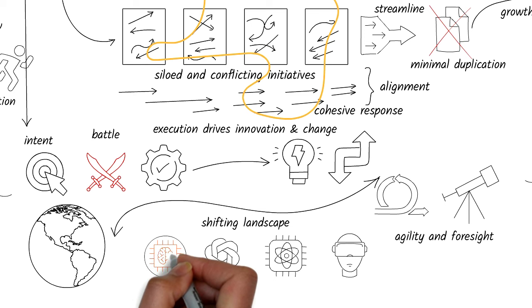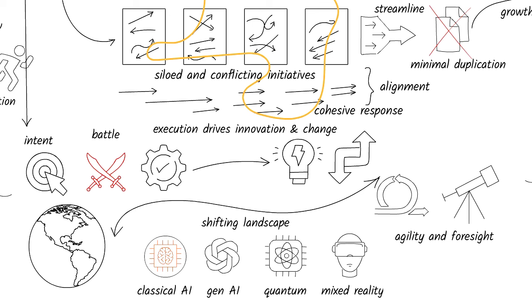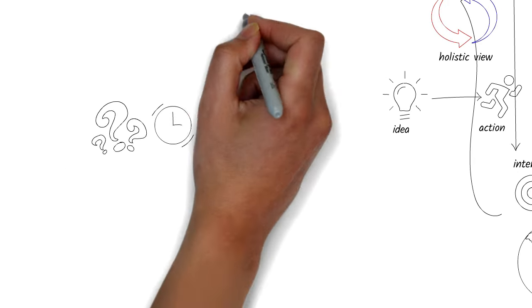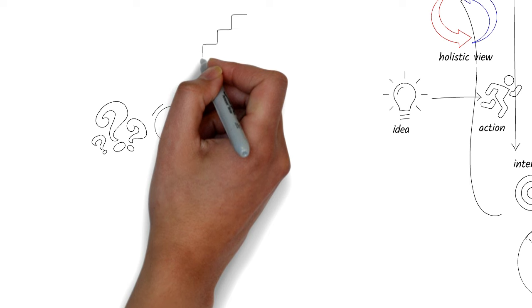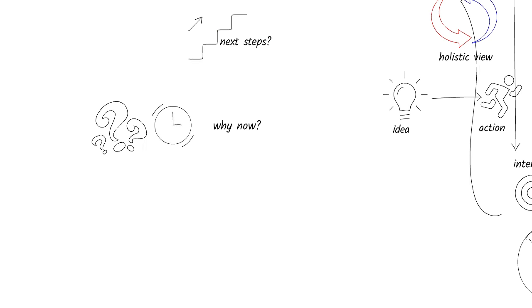So, this approach also turns strategy execution into a competitive advantage. It gives organizations the superpower of agility and resilience to adapt and thrive amidst change. Who wouldn't want that? A capability that gives an organization a competitive advantage. So, what are the next steps that leaders can take as they move to execution?